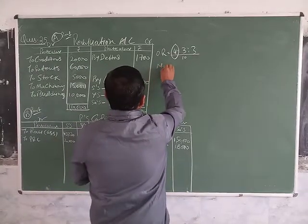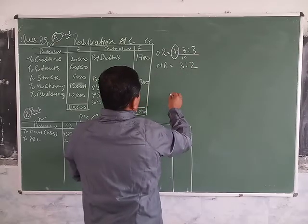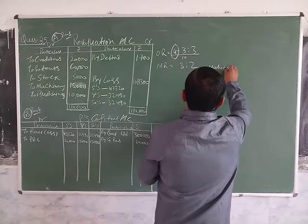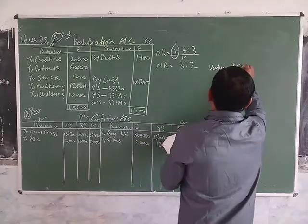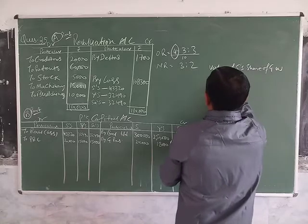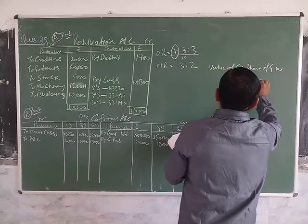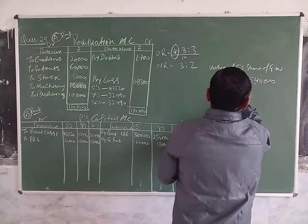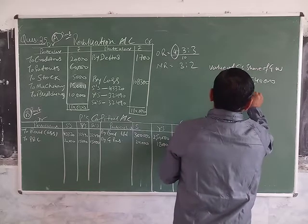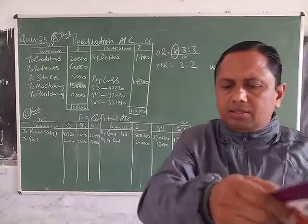The new ratio is 3:2. So the value of goodwill equals 4/10 into 5,40,000. That gives 2,16,000.